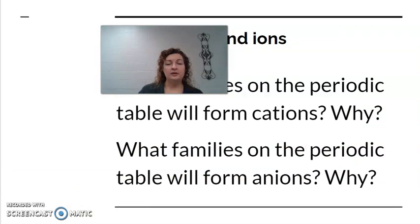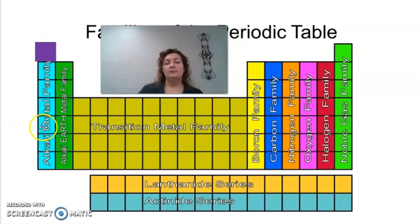So going back to our question about which families form cations and anions, you probably already know that metals in general. So these families over here are going to have lower valence electrons. So they end up giving them away. If we give away electrons, we end up more positive. So cations. So these families are going to be more cations while our non-metal families are going to be accepting those electrons. So they become more and more negative and they become anions.